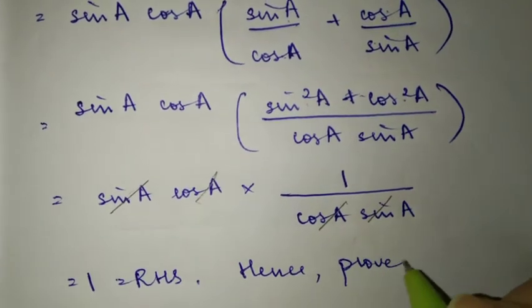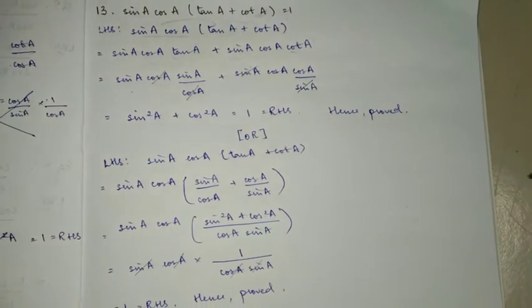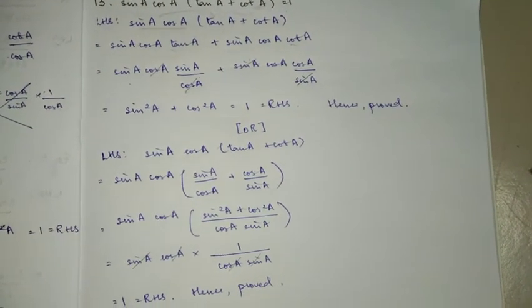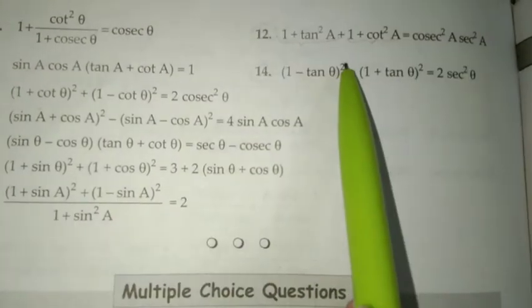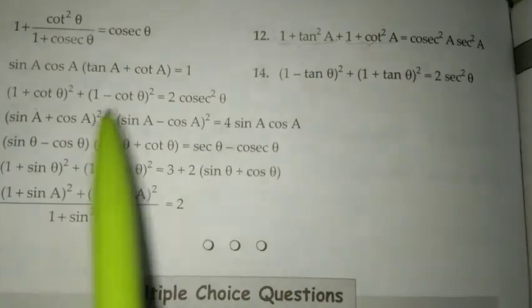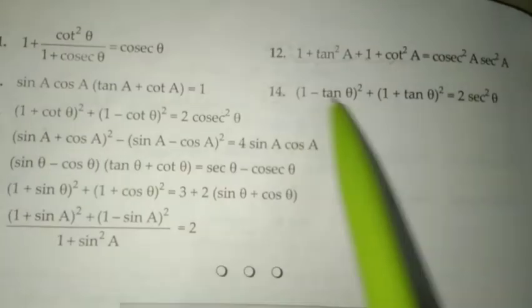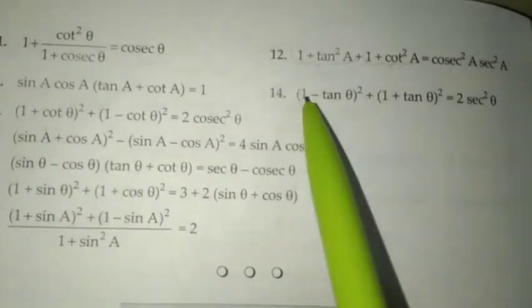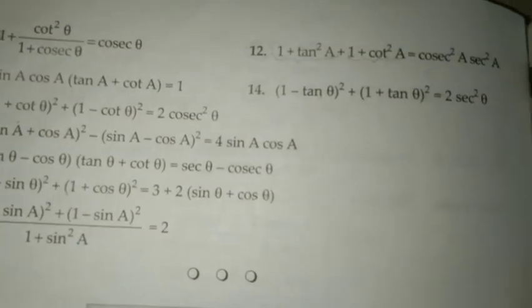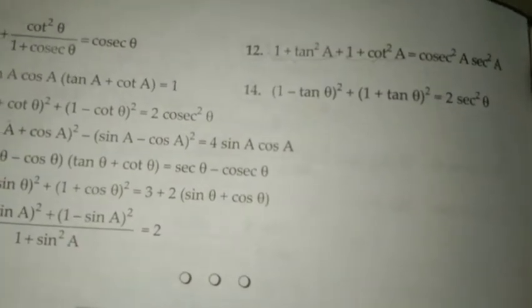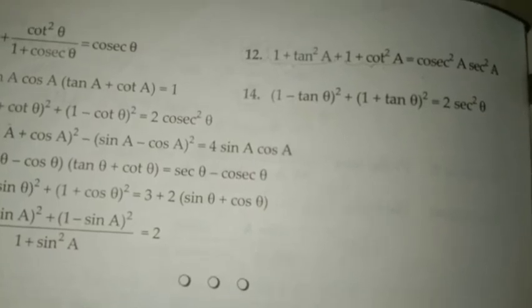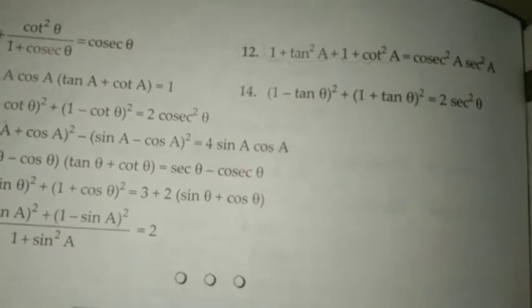These are two ways to solve question 13 — choose whichever you want. Now for question 14, we'll use direct substitution and expand using algebraic identities: (a minus b) whole square and (a plus b) whole square.